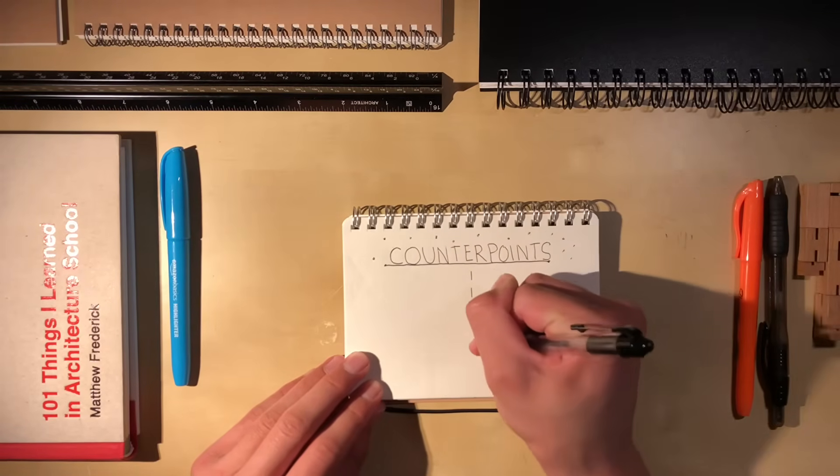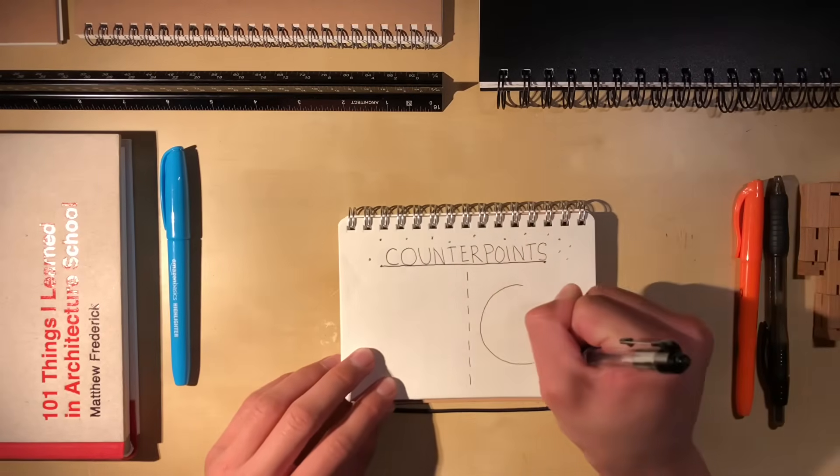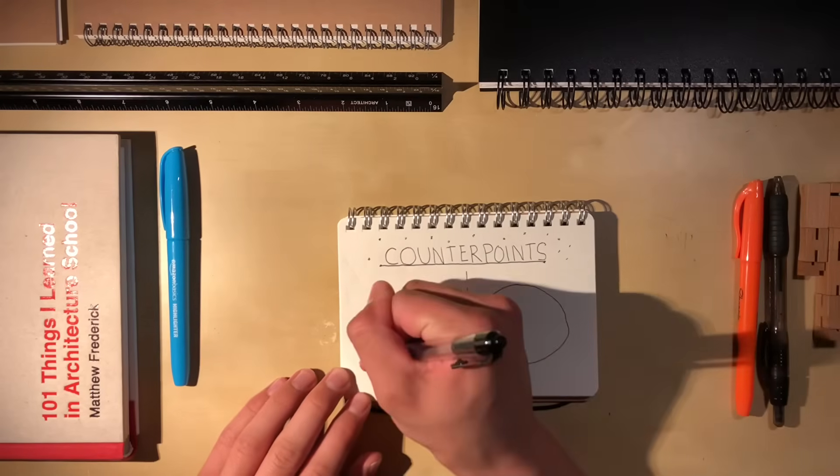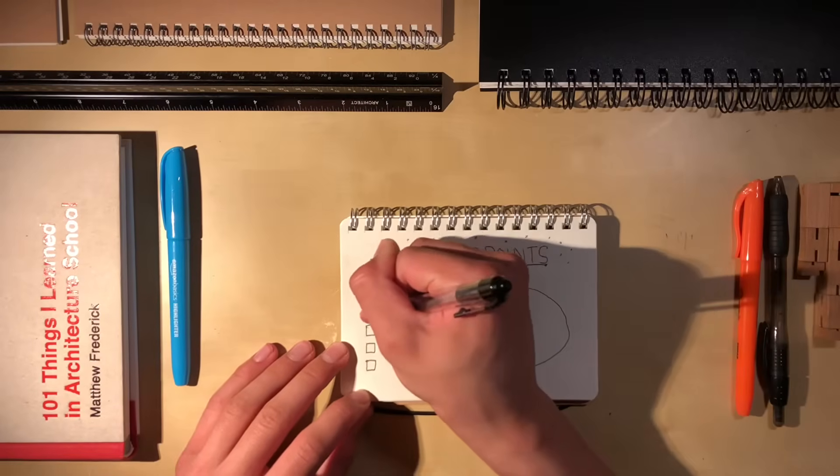Let's look at a non-architectural example of balance through counterpoints. We'll start with our line of asymmetry right here in the middle. On the right-hand side, we have a circle, and on the left-hand side, we have several boxes.